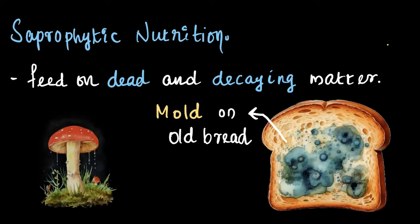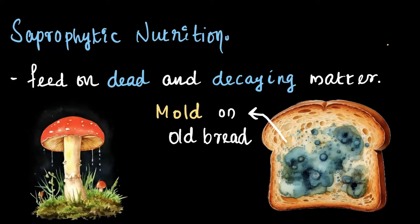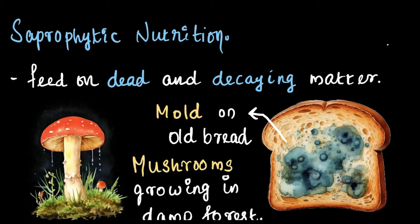Another example would be mushrooms growing in a damp forest. These mushrooms cannot produce their own food, and hence they absorb nutrients from the dead and decaying matter on the ground. This type of nutrition where organisms feed on dead and decaying matter is known as saprophytic nutrition, and the organisms that do this are called saprophytes.